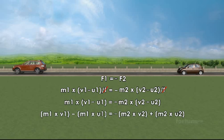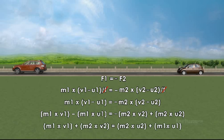M1 V1 minus M1 U1 equals minus M2 V2 plus M2 U2. And it can be written as M1 into V1 plus M2 into V2 equals M2 into U2 plus M1 into U1.